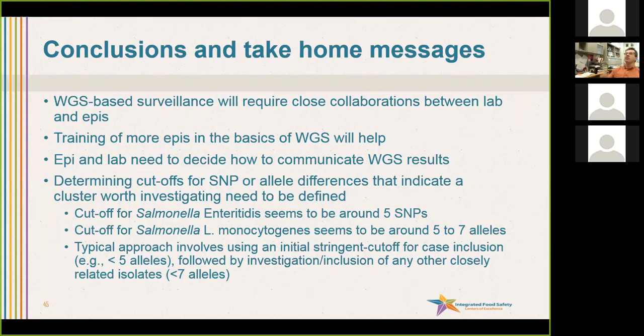From now until when we start routine whole genome sequencing, it makes sense to try to start communication — see how do we look at trees, what allele differences mean, what do other people do — and have conversations like we're having here to prepare for the time where that's the only data that is going to be communicated. The big thing obviously is to determine the cutoffs for SNPs, or more importantly allele differences for whole genome MLST. Data on what cluster is worth investigating: for Salmonella enteritidis experience tells most people that's around five SNPs or five alleles, and for Listeria monocytogenes that seems to be around five to seven alleles.